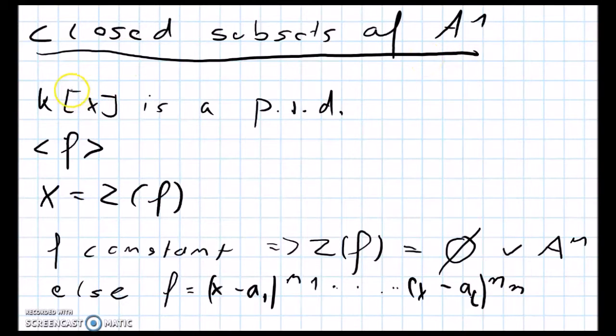Remember that k[x] is a principal ideal domain, meaning that every ideal is generated by just one polynomial. And this means that every affine algebraic set x is z of a single polynomial.